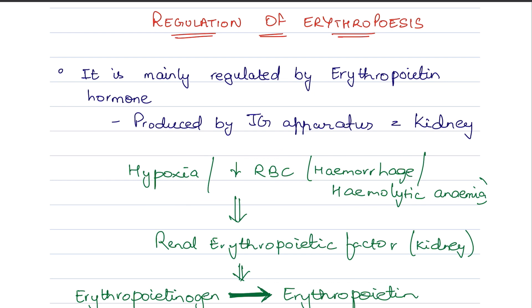The kidney has a renal erythropoietic factor. It will be activated. And due to this activation, erythropoietinogen, which is inactive form, will activate to erythropoietin.